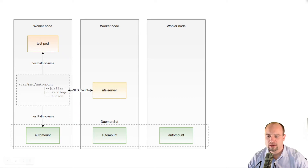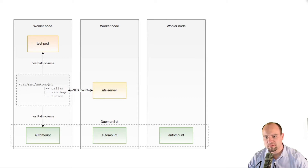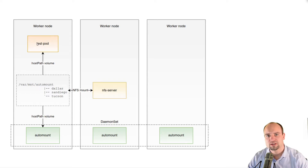On that file system, the automounter will mount the NFS shares. Now that we have the NFS shares mounted onto the file system of the OpenShift node, we need to make those shares accessible to the application containers. We are going to use the same approach: mount the part of the node's file system where those NFS shares are as a host path volume into the application pods. So the application pods can find the NFS shares and access them directly in the container.